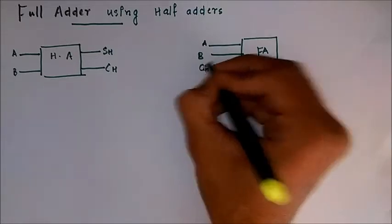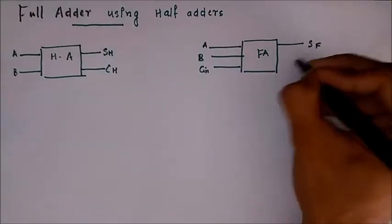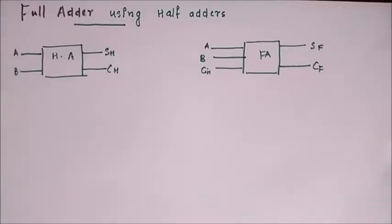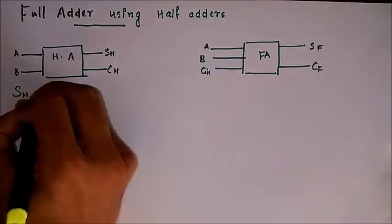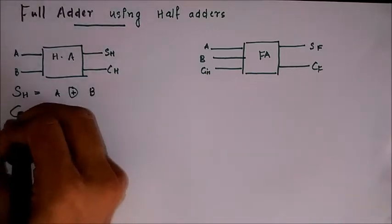Similarly for this, there are three inputs: A, B, and carry in from the previous output, and there is a sum and a carry out. So from the previous discussions we know that the sum of a half adder is simply A XOR B.